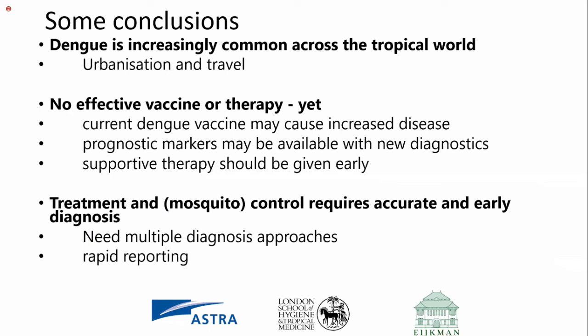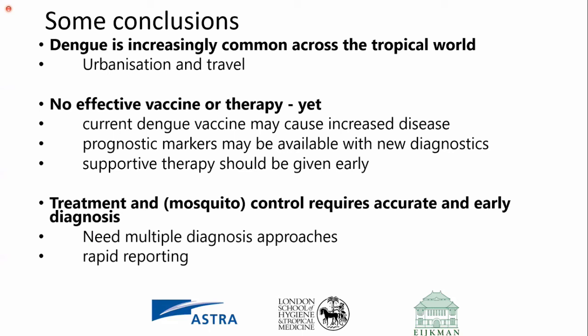In conclusion: dengue is increasingly common across the tropical world due to urbanization and travel, with no effective vaccine or therapy yet — though I'm hoping this will come soon. The current dengue vaccine may cause increased disease in those who have not been exposed to dengue previously, so we should concentrate on detecting dengue early and giving supportive therapy early. Meanwhile, control is based around mosquito control. Thank you to AstraZeneca for funding the London School, and to the Eichmann Centre for working together with us on all of this work.